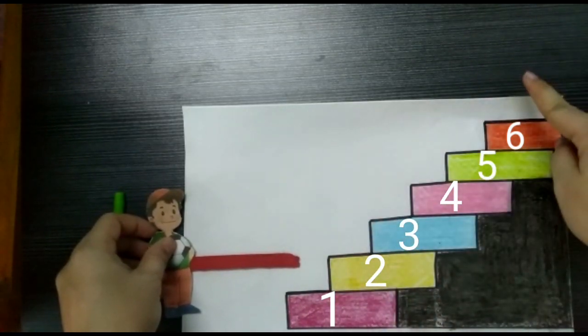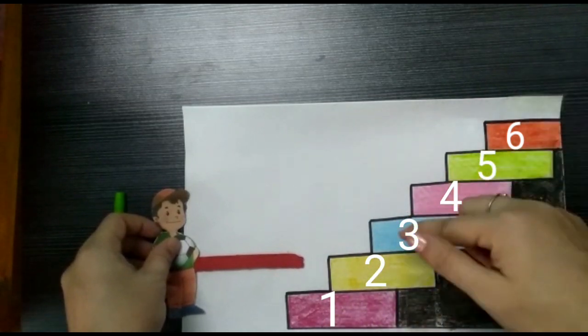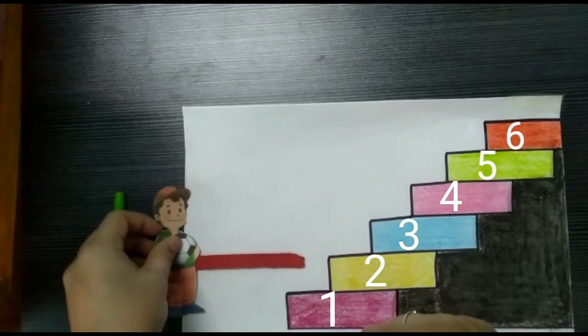When we move from upstairs to downstairs, the numbers keep decreasing. That is why we call it decreasing order.